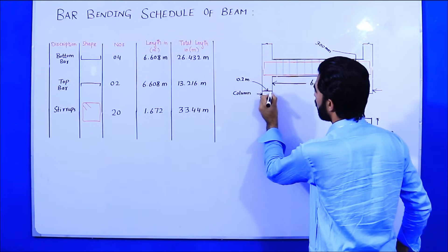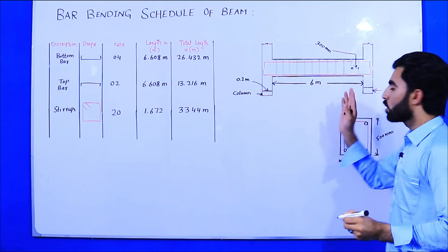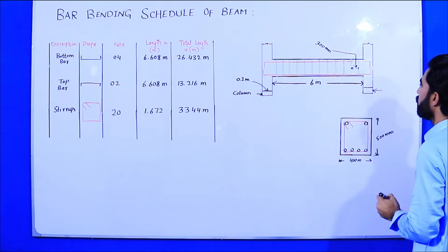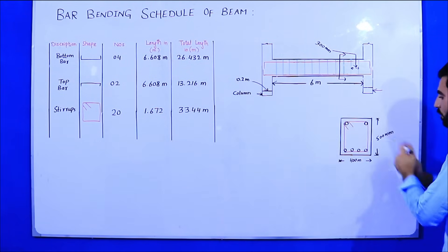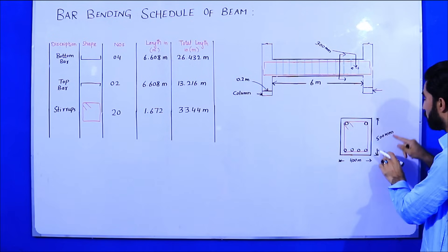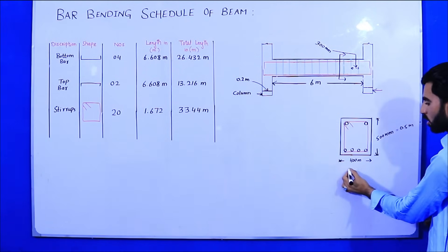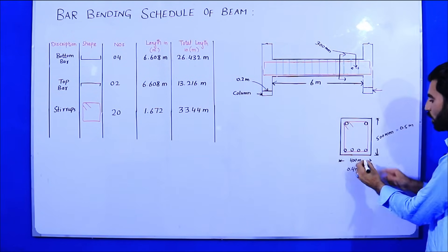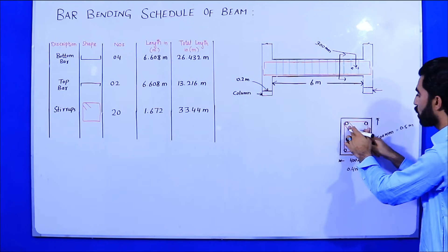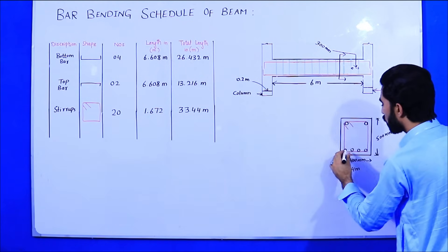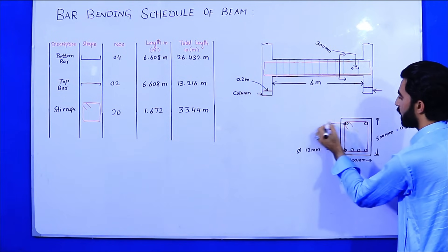Each column width is 0.2 meter, which is important for finding the total length of the steel bar. The section of the beam shows that the total depth of the beam is 500 millimeters and its width is 400 millimeters. At the bottom we have four numbers of steel bars, and at the top we have two numbers of steel bars. Both bottom and top bar diameter is 12 millimeters.